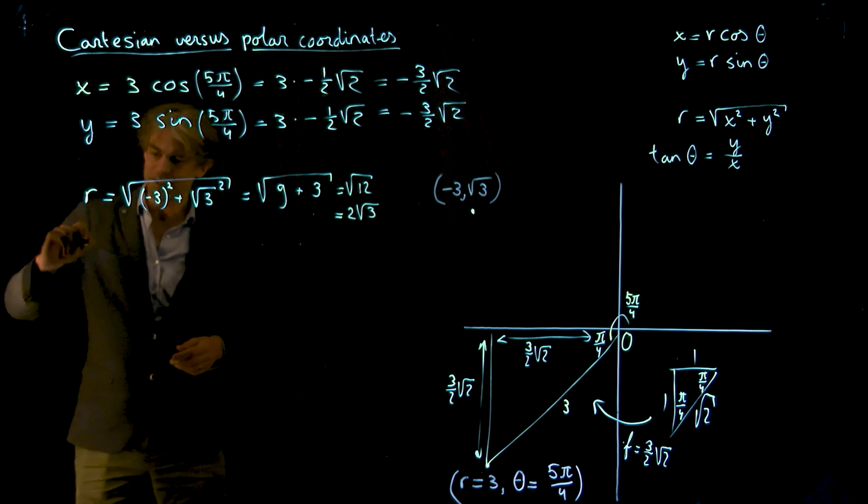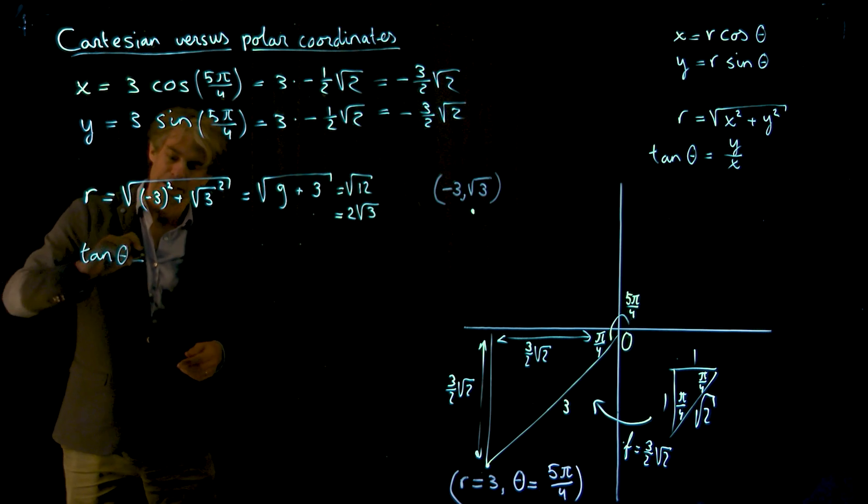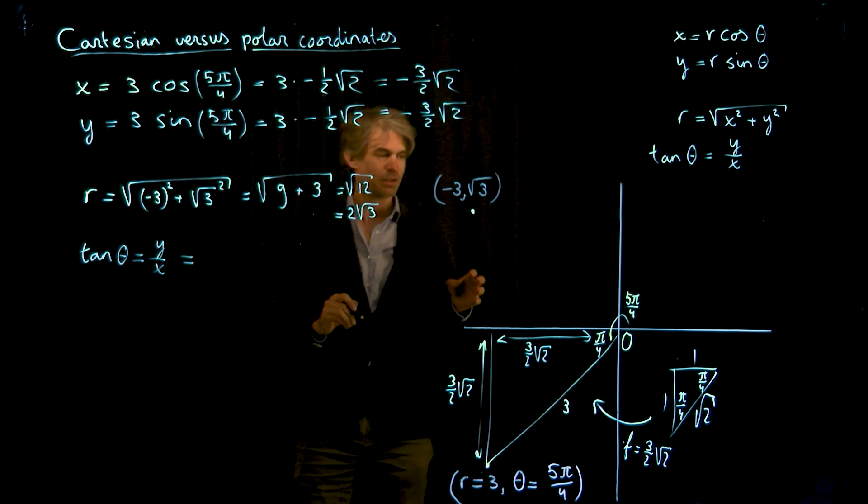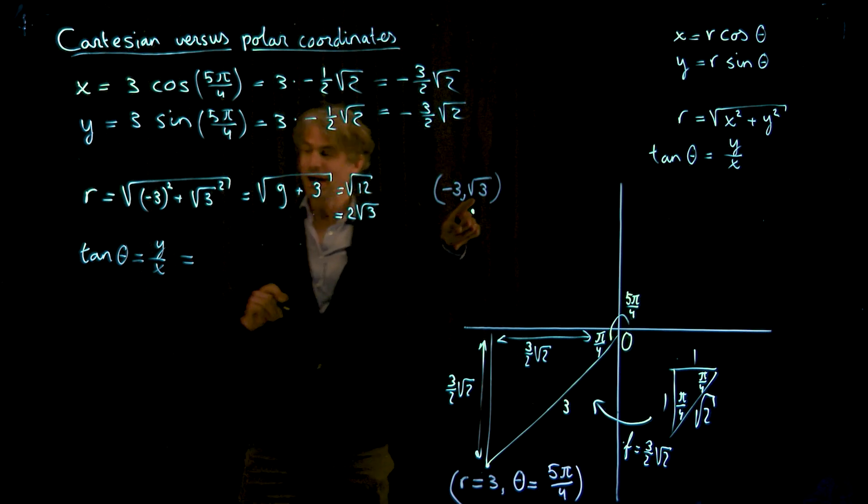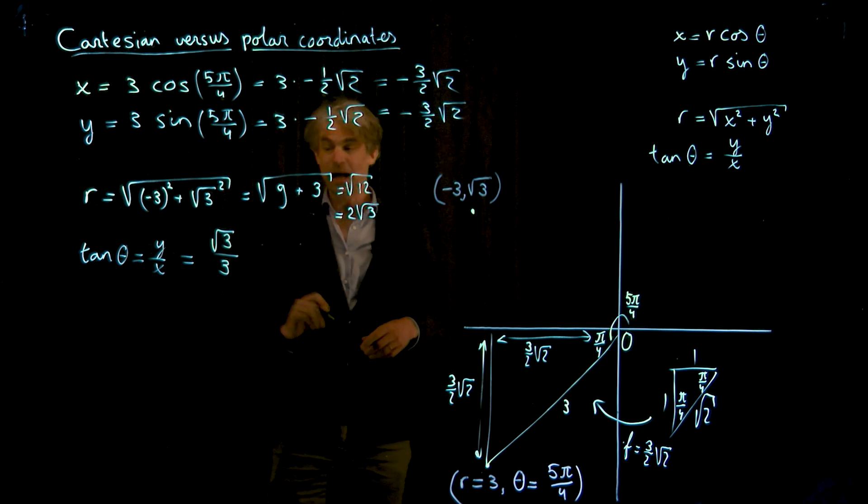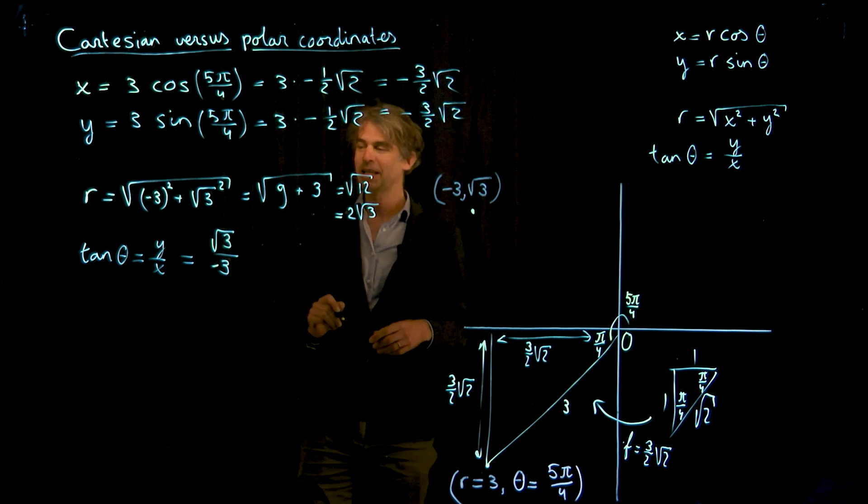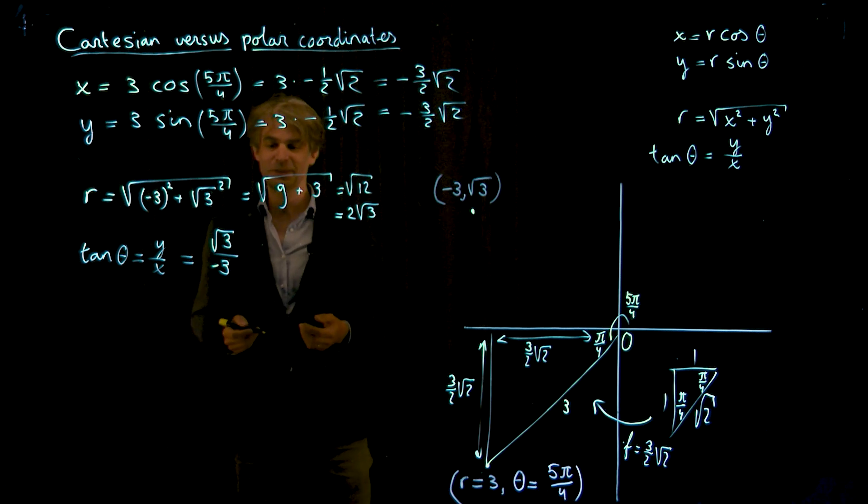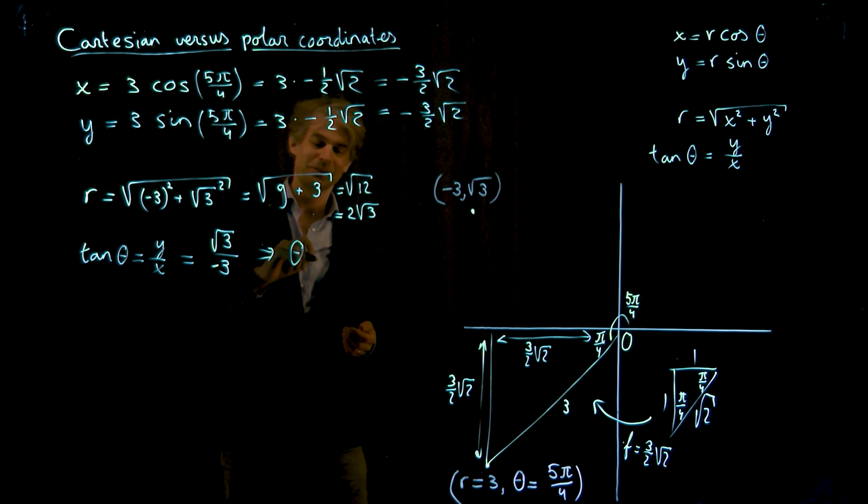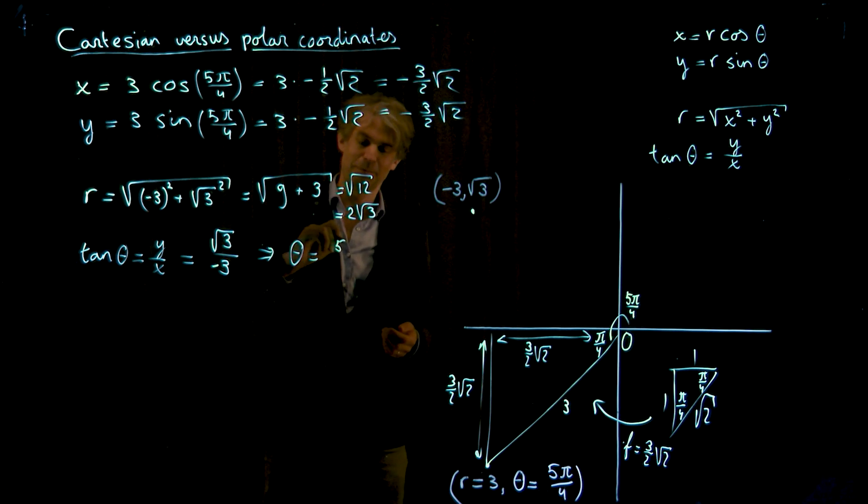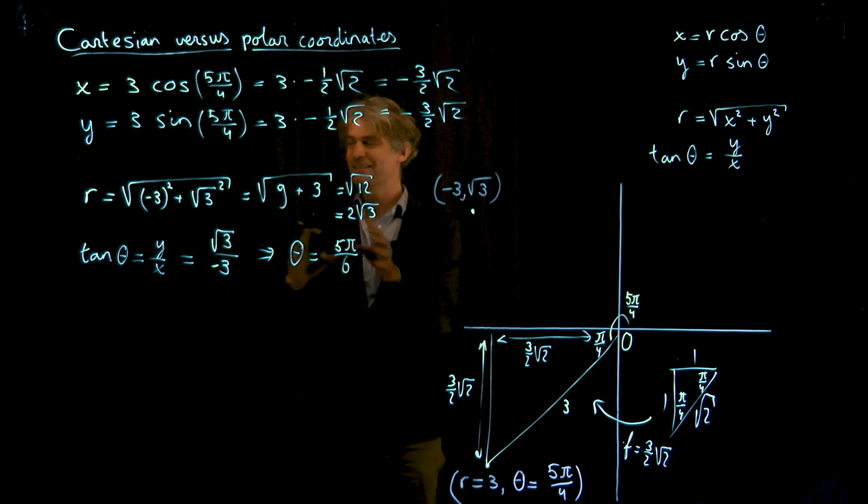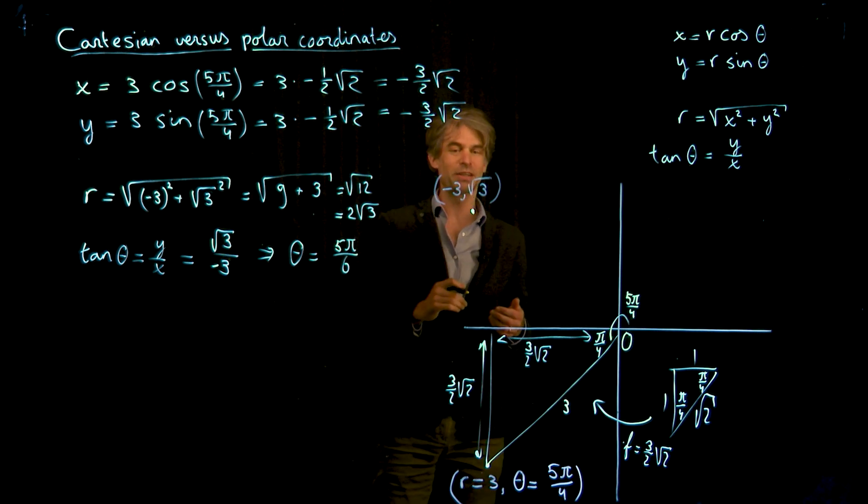And then for the other one, we know that the tangent of theta equals y over x, and that's equal to, let's see, there's my y, square root of 3 divided by 3. And now it all comes down to knowing your tangent values again, but if you do, you might be able to go from here to the fact that theta is exactly 5 pi over 6.